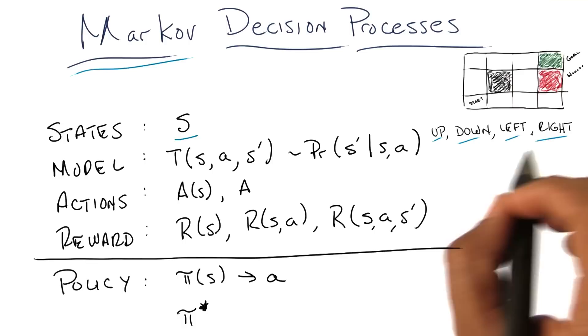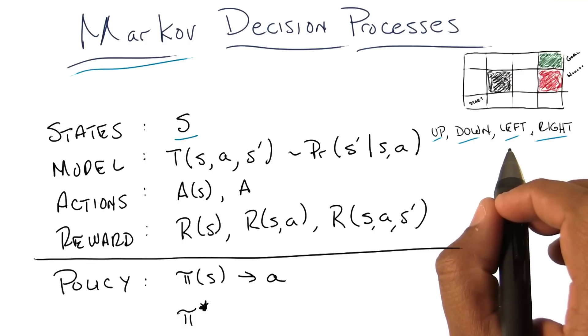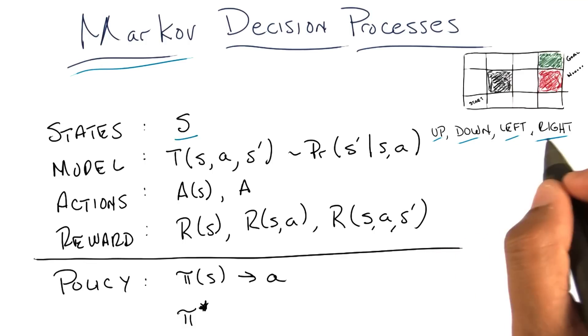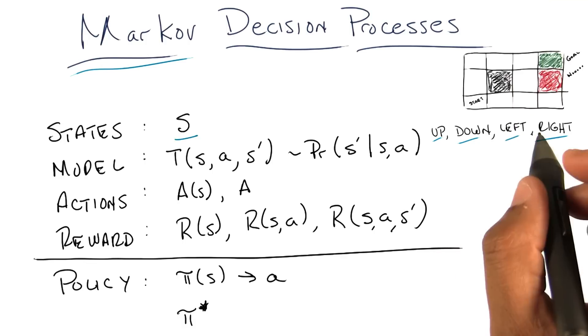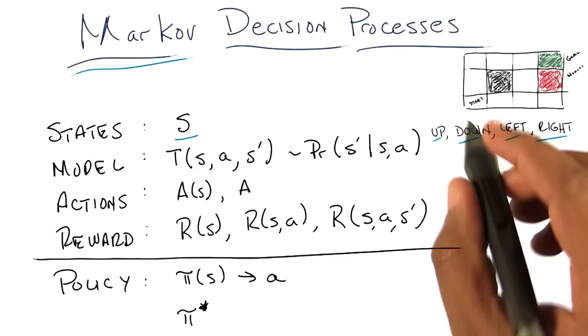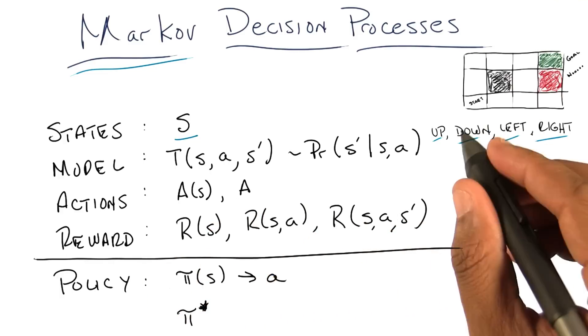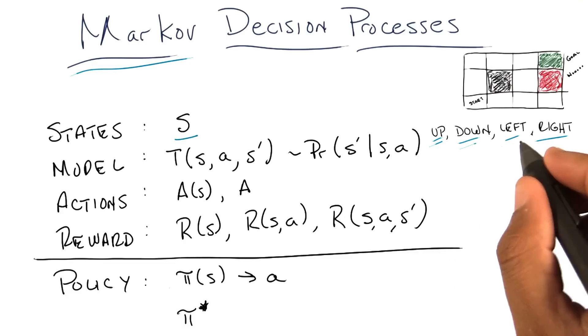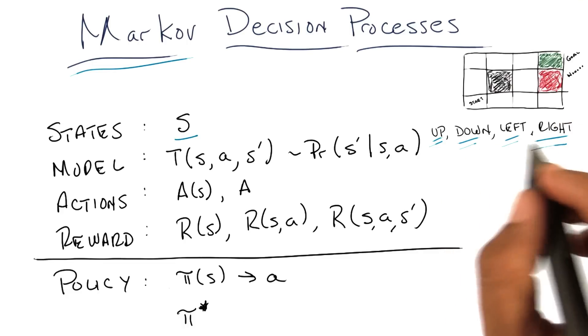You'll notice that, as I described before, there was no option not to move. But there could have been, and there could have been other actions like teleport, or anything that you can imagine. But the point is that your action set represents all of the things that the agent, the robot, the person, or whatever it is you're trying to model, is allowed to do.